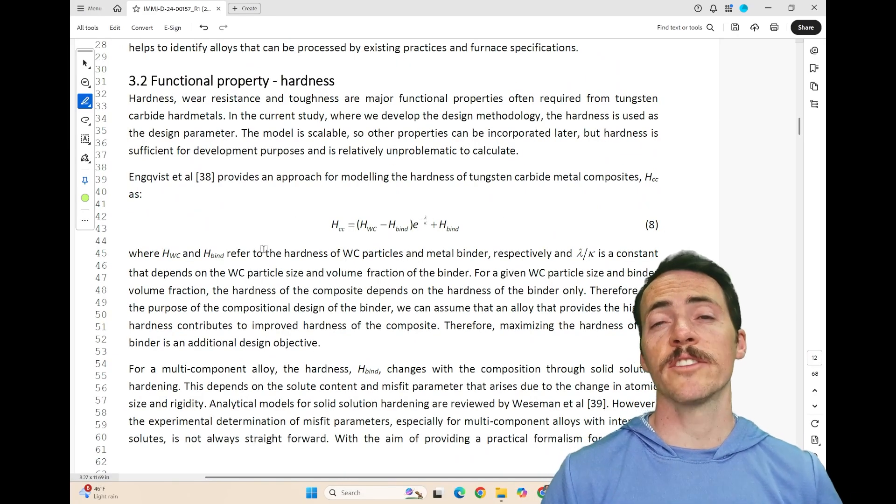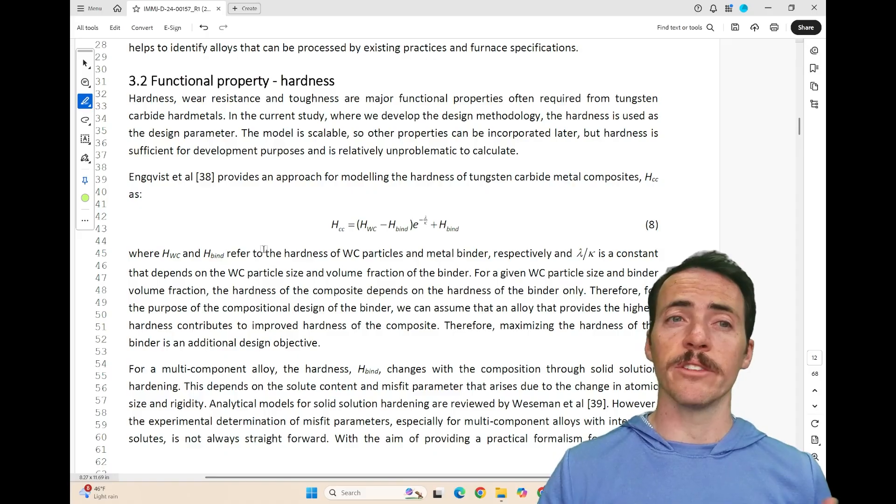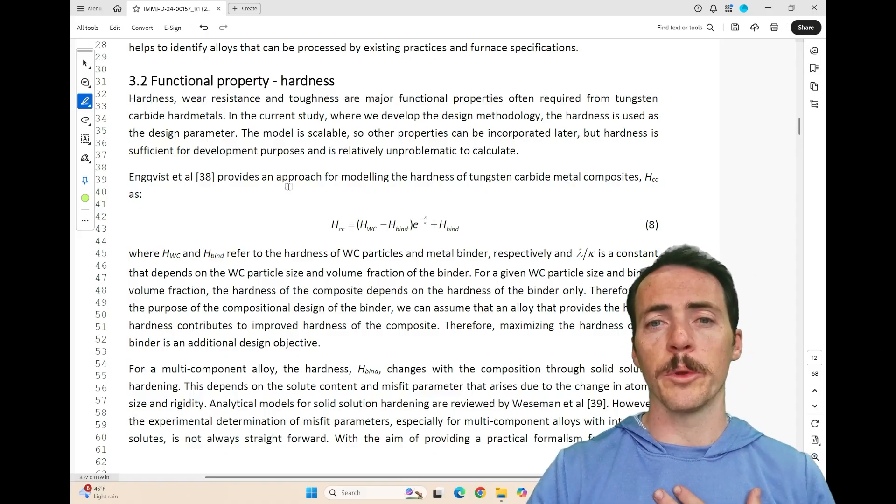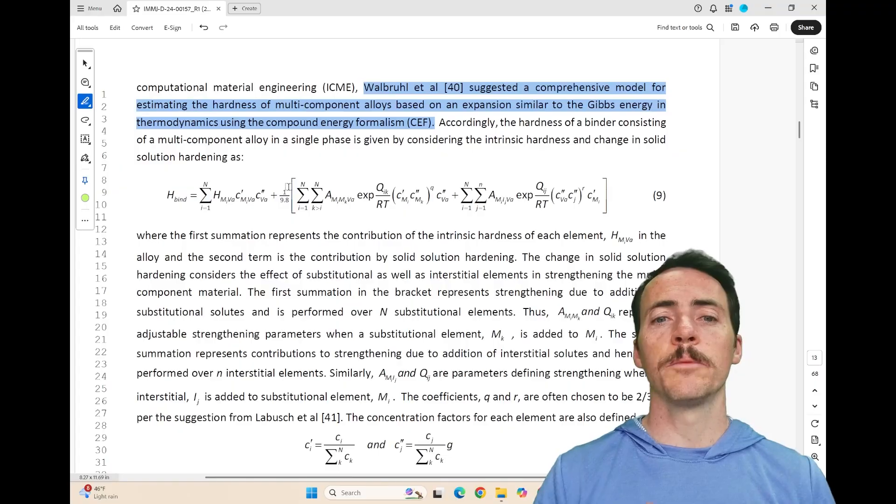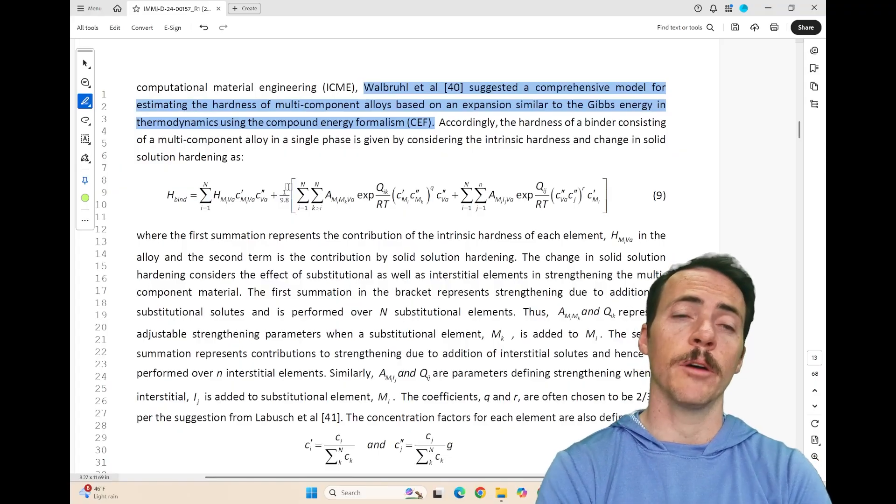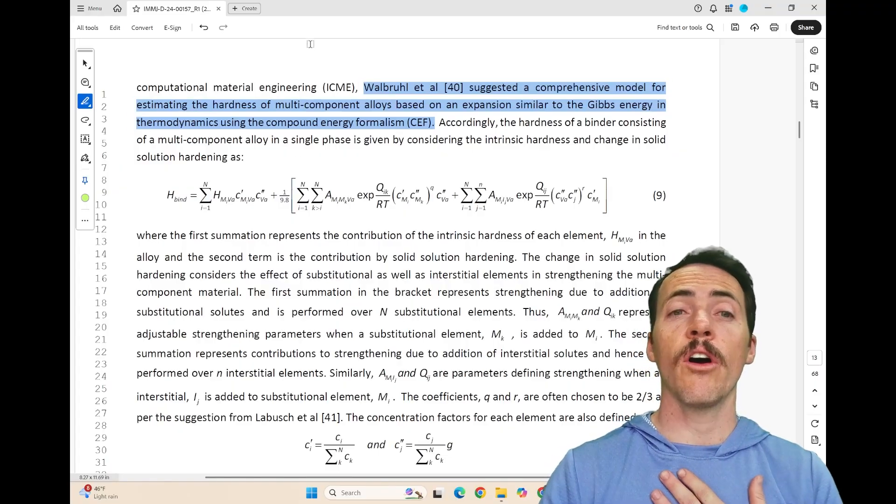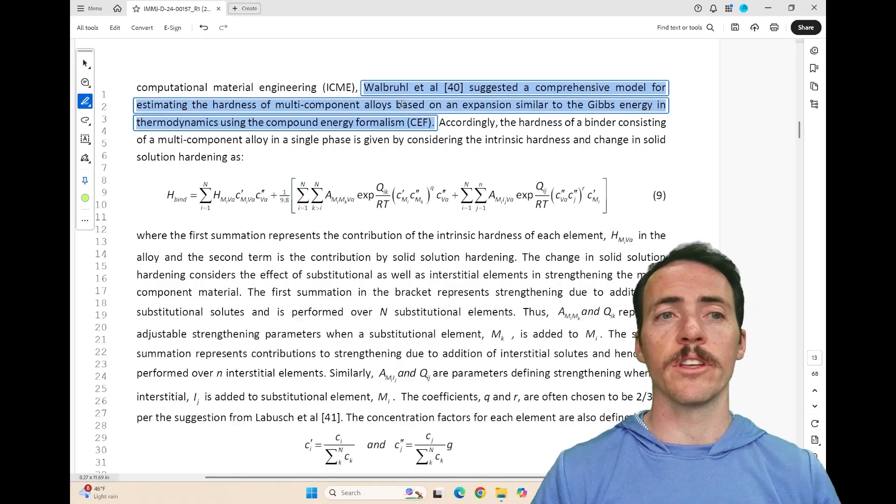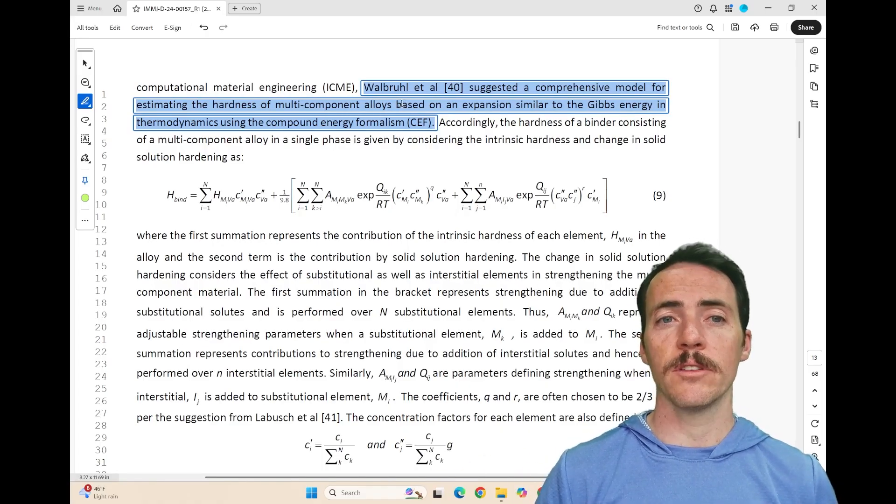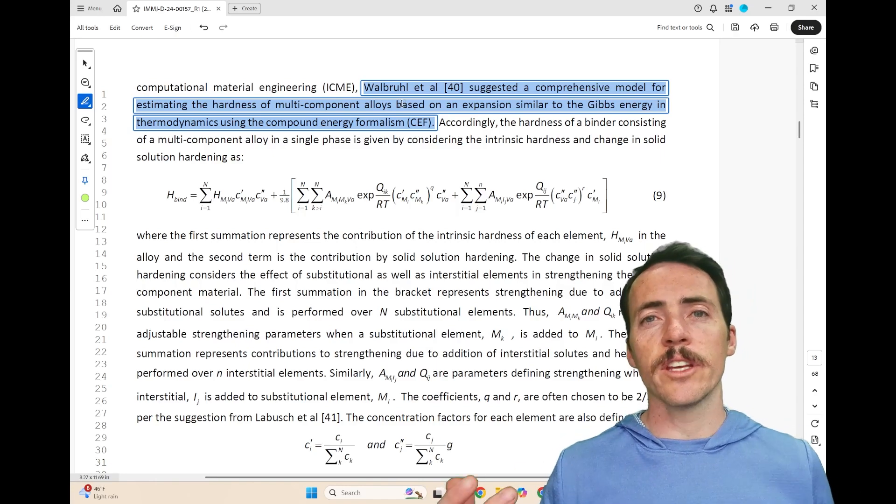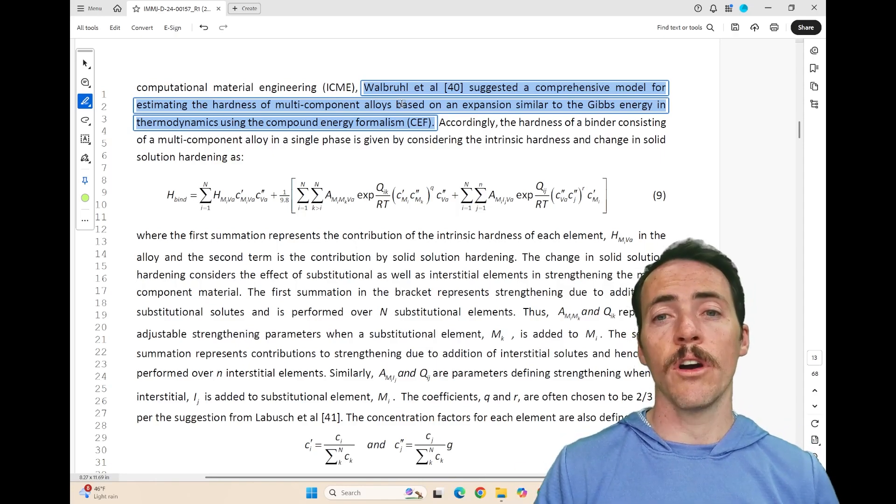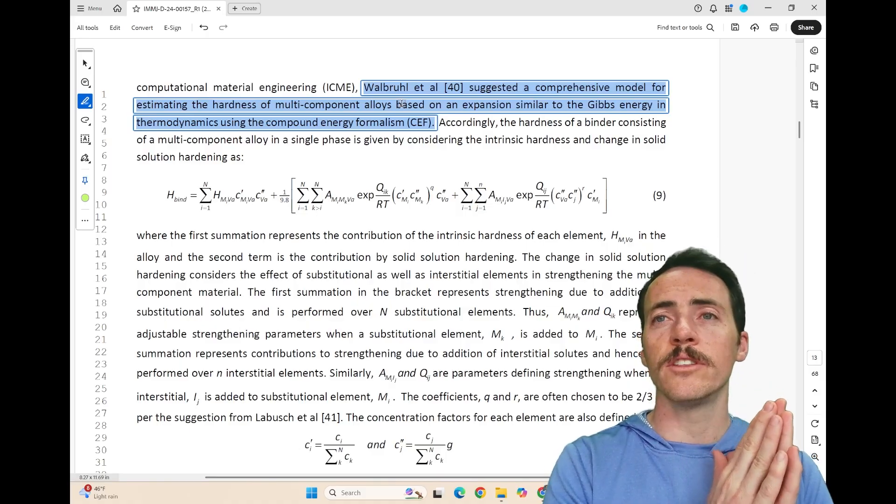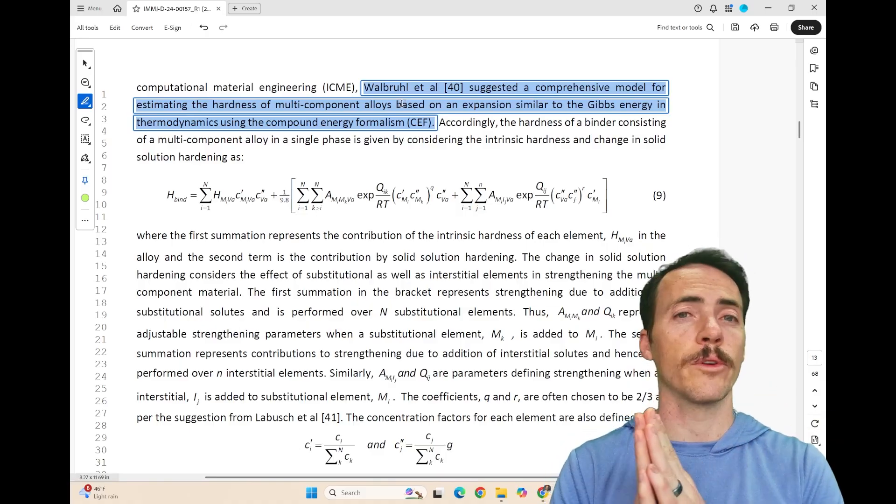But apart from just being able to process it effectively, it has to have the right properties. Hardness is the primary one they're looking at here. And they've obviously pointed out that there's been a number of models used. Ultimately, they're talking about the Walbrill model. This is essentially a comprehensive one accounting for the hardness of multi-component alloys using expansion similar to the Gibbs energy in thermodynamics used in the compound energy formalism. This is essentially capturing things like solid solution hardening, so it should give you a feel for the hardness. So we now know we have a proxy for both the hardness and a proxy for the sinterability.